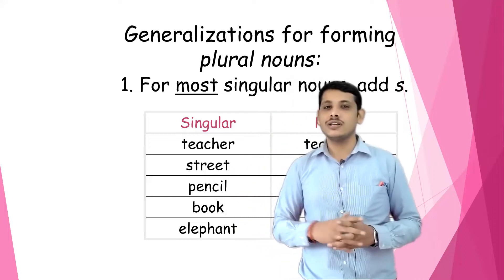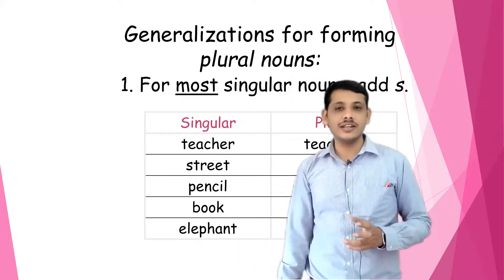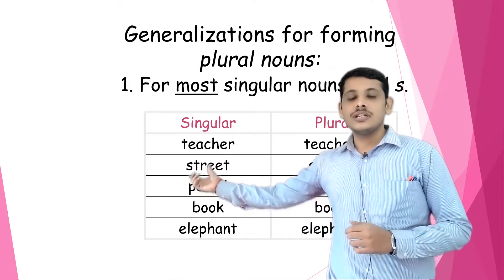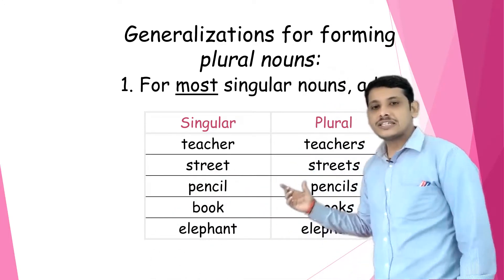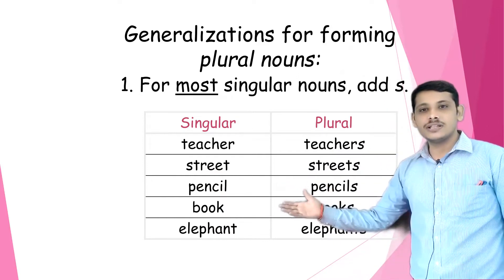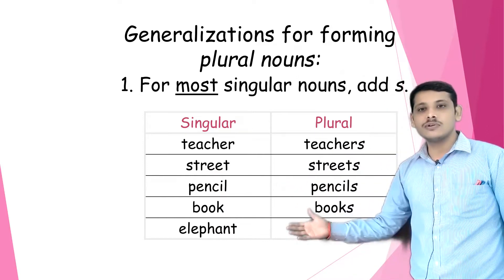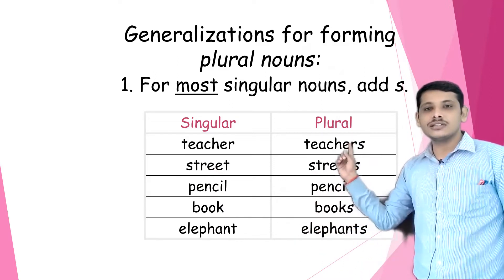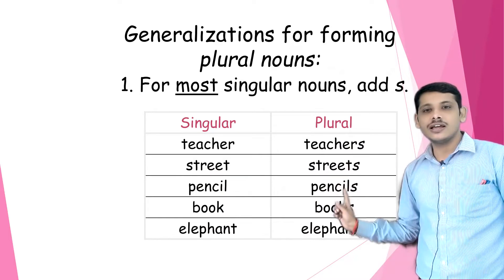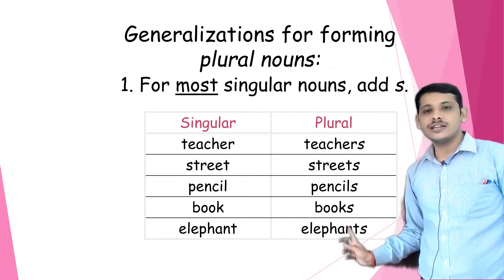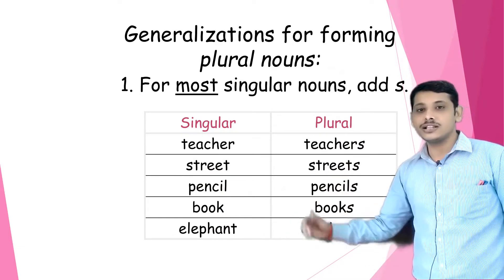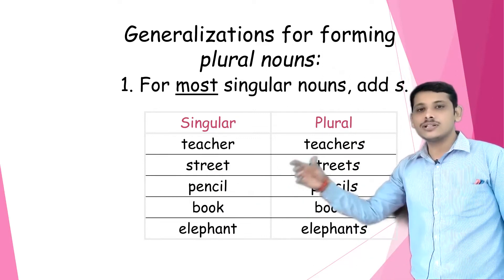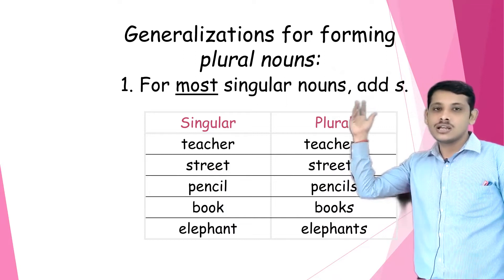The first rule of making plural nouns we have seen is just by adding the letter 's' at the end — we add the suffix. For example: teacher → teachers, street → streets, pencil → pencils, book → books, elephant → elephants. I'm just adding the letter 's' at the end, and whenever we add 's' at the end we get the plurals. Whenever it is possible to make plurals by adding 's', we call these regular plurals.